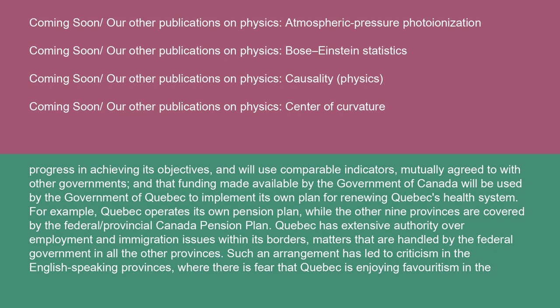For example, Quebec operates its own pension plan, while the other nine provinces are covered by the federal-provincial Canada Pension Plan. Quebec has extensive authority over employment and immigration issues within its borders, matters that are handled by the federal government in all the other provinces.